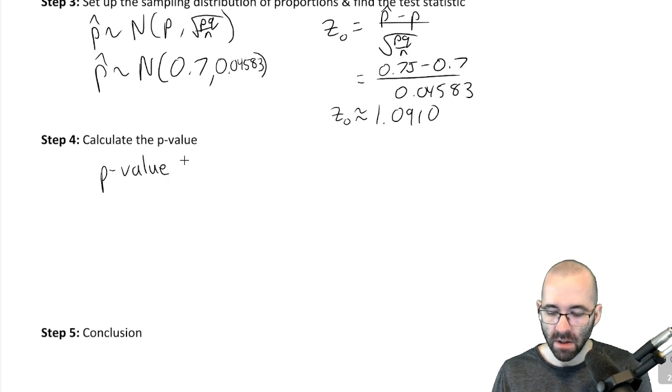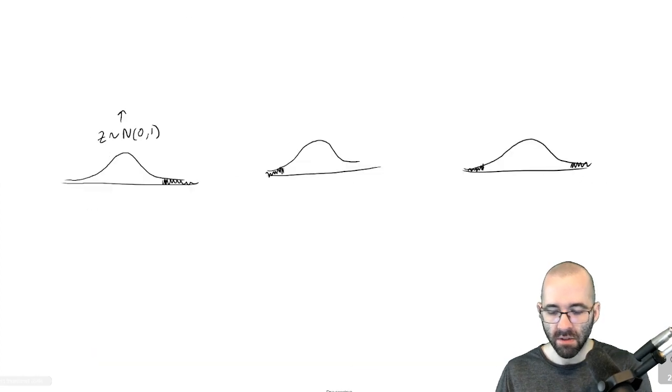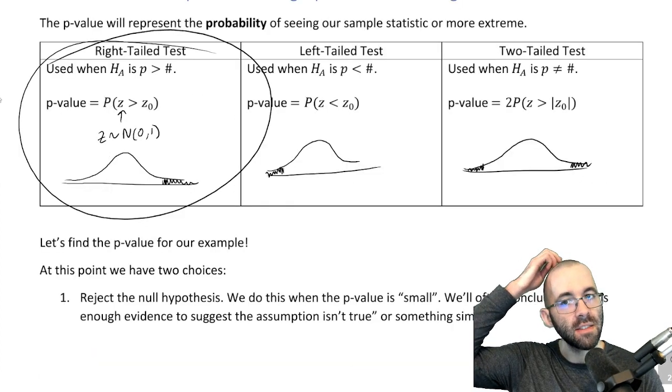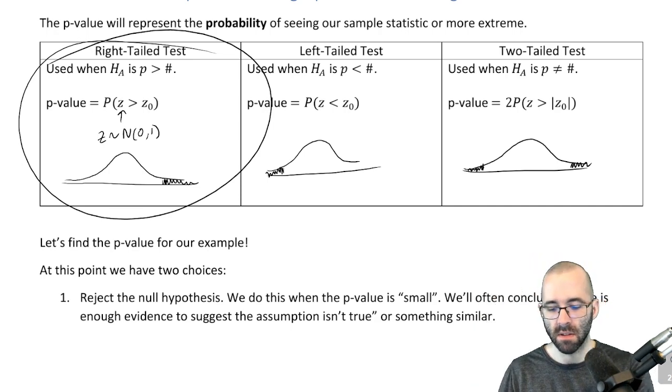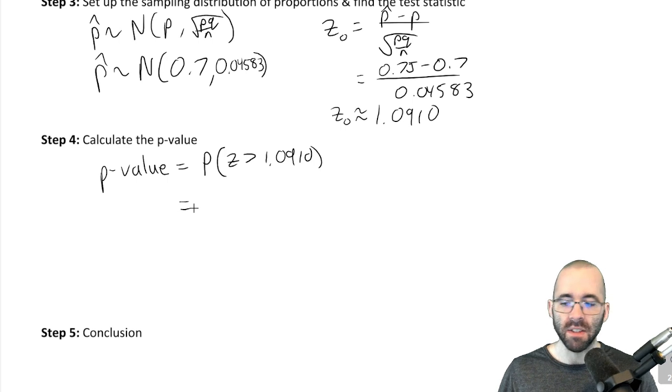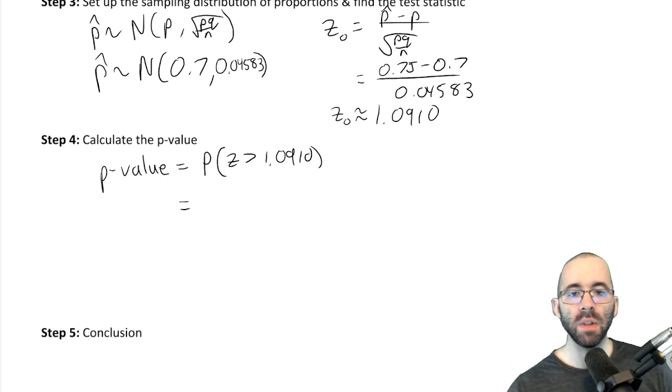So the p-value is just the probability that z is at least our test statistic of 1.0910. We get that from this right-tailed test. To find the probability of a standard normal random variable, we use GeoGebra.